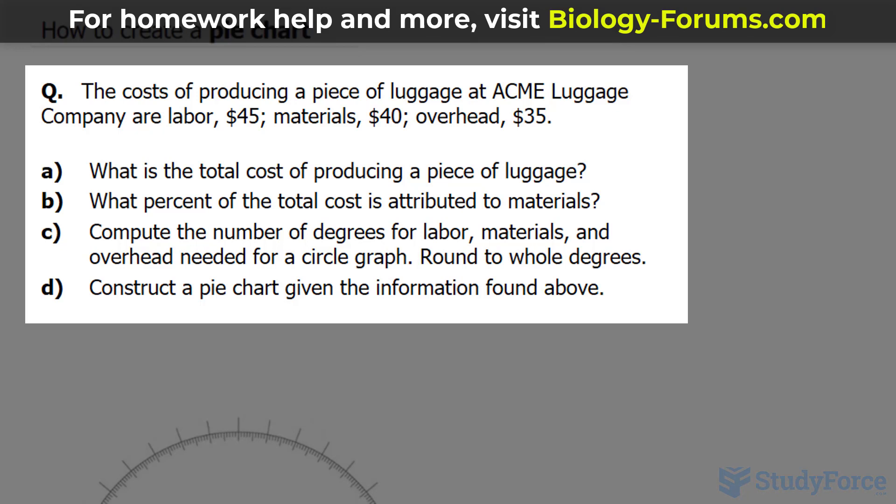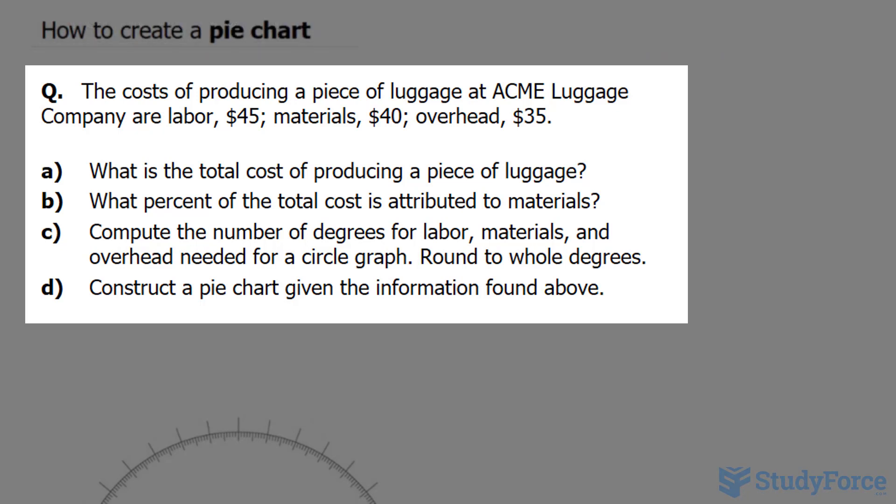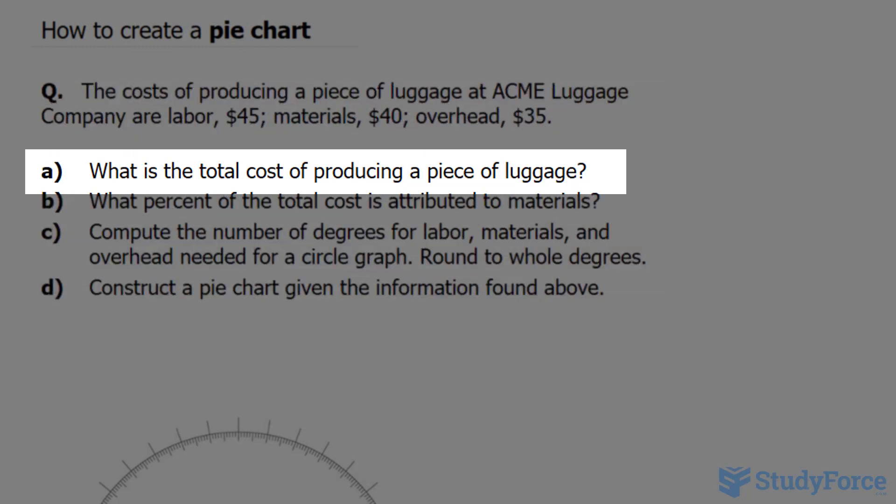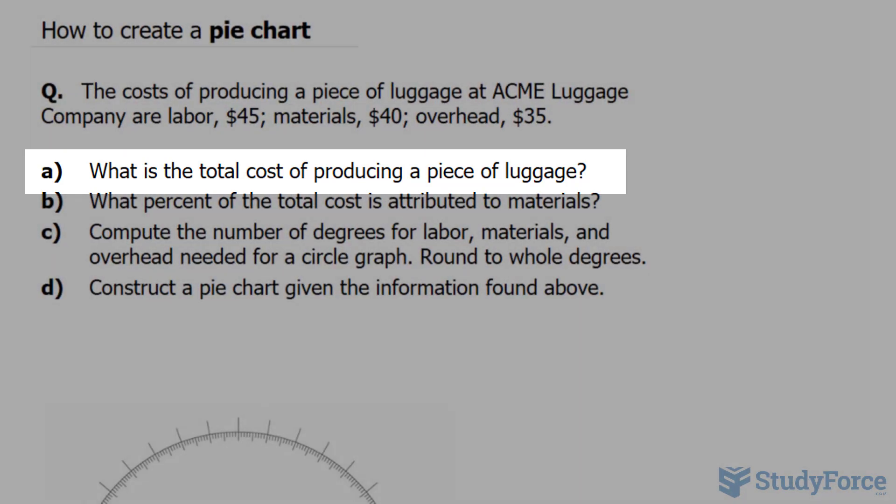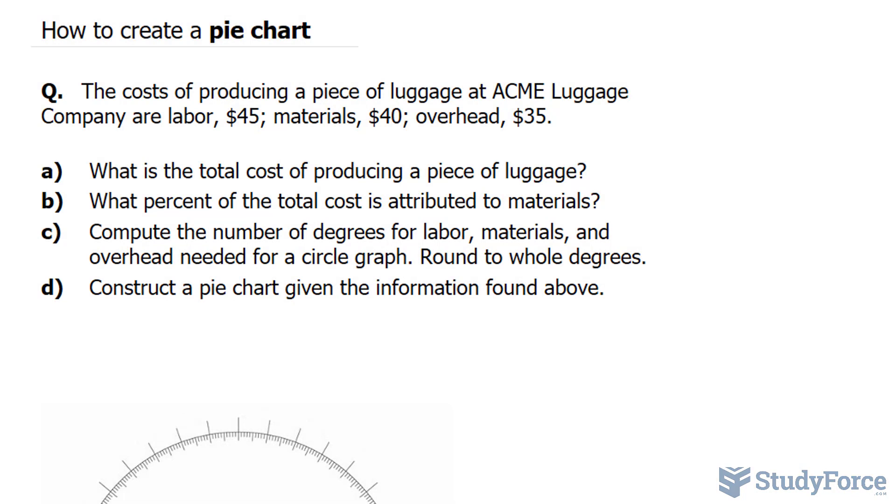Before I can start showing you how to create a pie chart, let's answer some of these questions together. Starting with A, what is the total cost of producing a piece of luggage? For this, all we do is add up all of these numbers together. So I'll write down 45 plus 40 plus 35. If you use your calculator or do this in your head, you should end up with $120 as the total cost of making one piece of luggage.